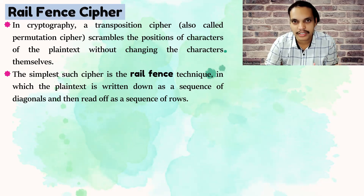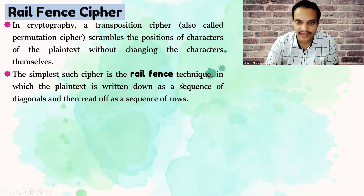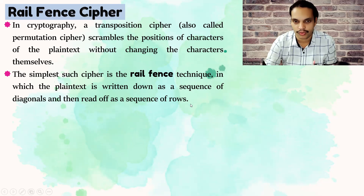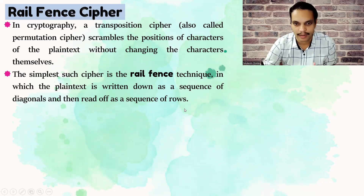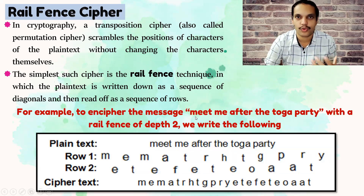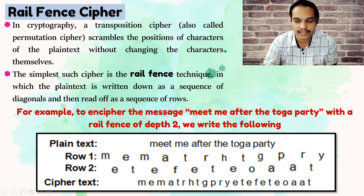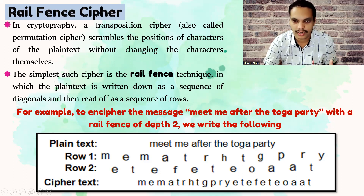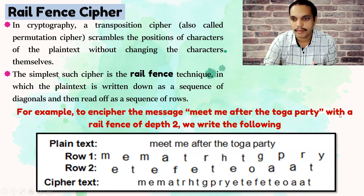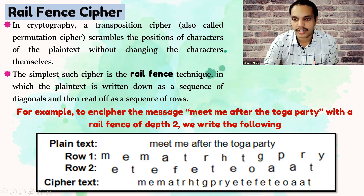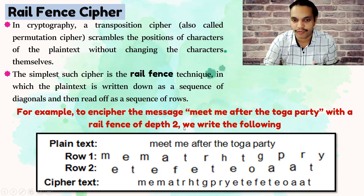One of the simplest transposition techniques is the rail fence technique, in which the plain text is written down as a sequence of diagonals and then read off as a sequence of rows. For example, the message I want to send is 'meet me after the toga party'. A transposition technique simply changes the order of the letters. Here, this plain text is converted into ciphertext using the rail fence technique with a depth of two, meaning we use two rows.